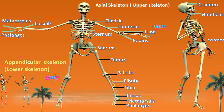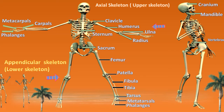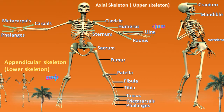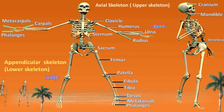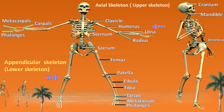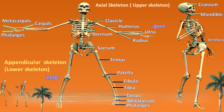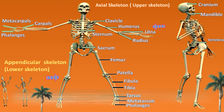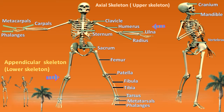Then we have the sacrum. Following that we have the femur. Now the femur is otherwise known as the thigh bone and it is the largest bone of the skeleton system.